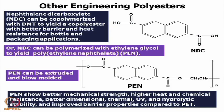There are more engineering polyesters already developed and commercialized. Instead of one phenyl ring, there could be more than one phenyl ring — say a naphthalene ring. When two carboxyl groups are attached to a naphthalene ring, that is known as naphthalene dicarboxylate, NDC. This is a symmetrical molecule.